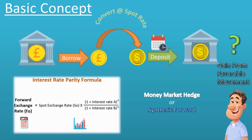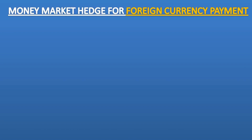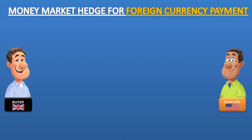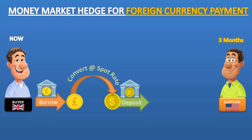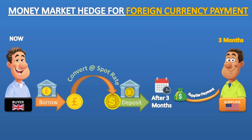This technique is known as a money market hedge or synthetic forward. To set up a money market hedge for a foreign currency payment, suppose a British buyer needs to pay a supplier in U.S. dollars in three months' time. Instead of negotiating a forward contract, the company could: step one, borrow the appropriate amount in pounds now; step two, convert the sterling to dollars immediately at the spot rate; step three, put the dollars on deposit in a dollar bank account. When the time comes to pay, the company pays the supplier out of the dollar bank account and repays the loan in pounds.